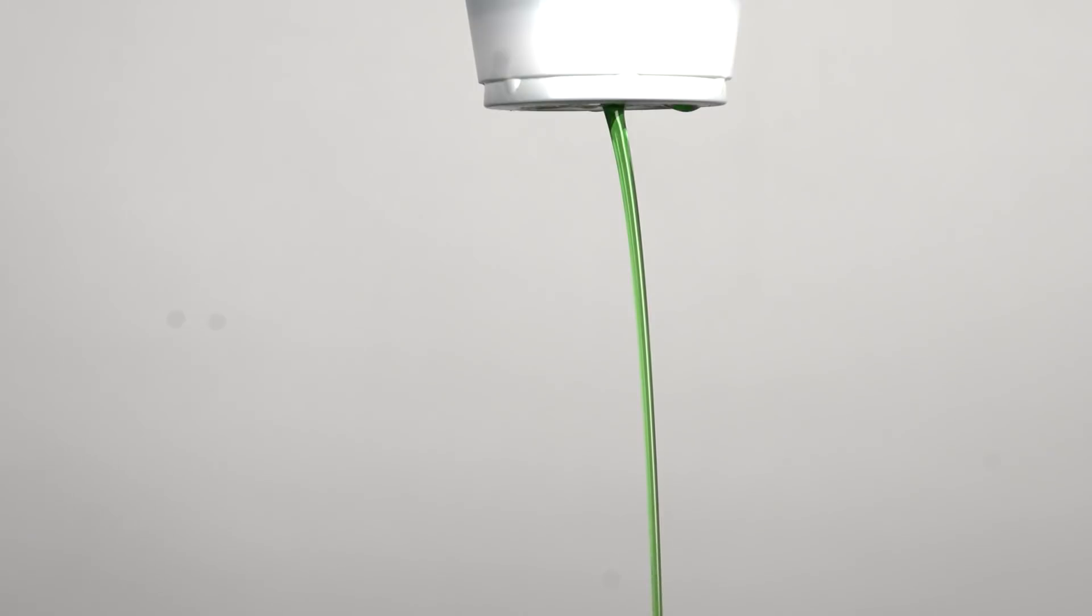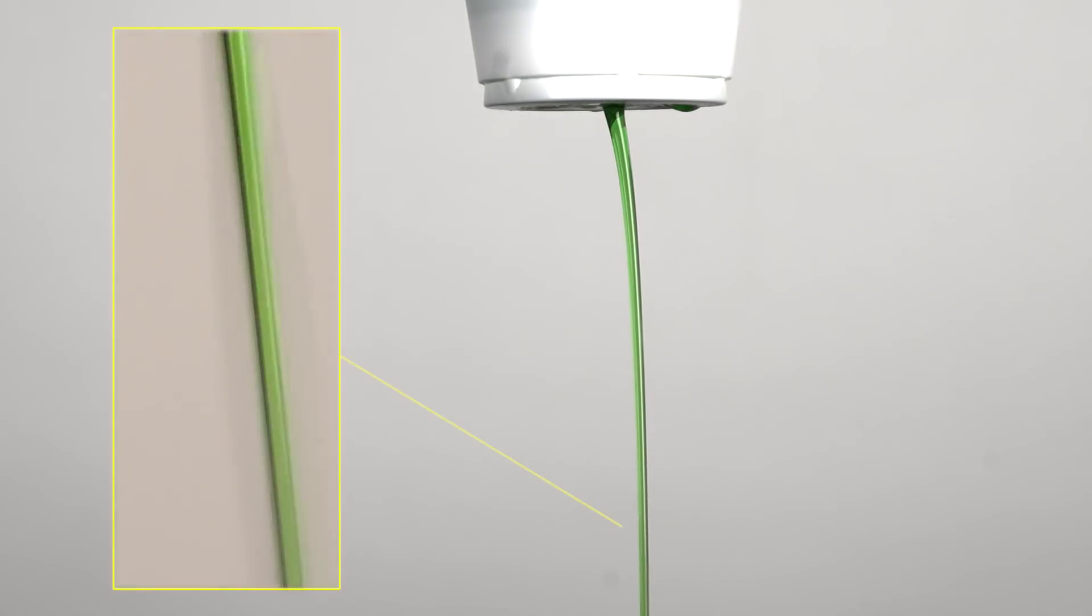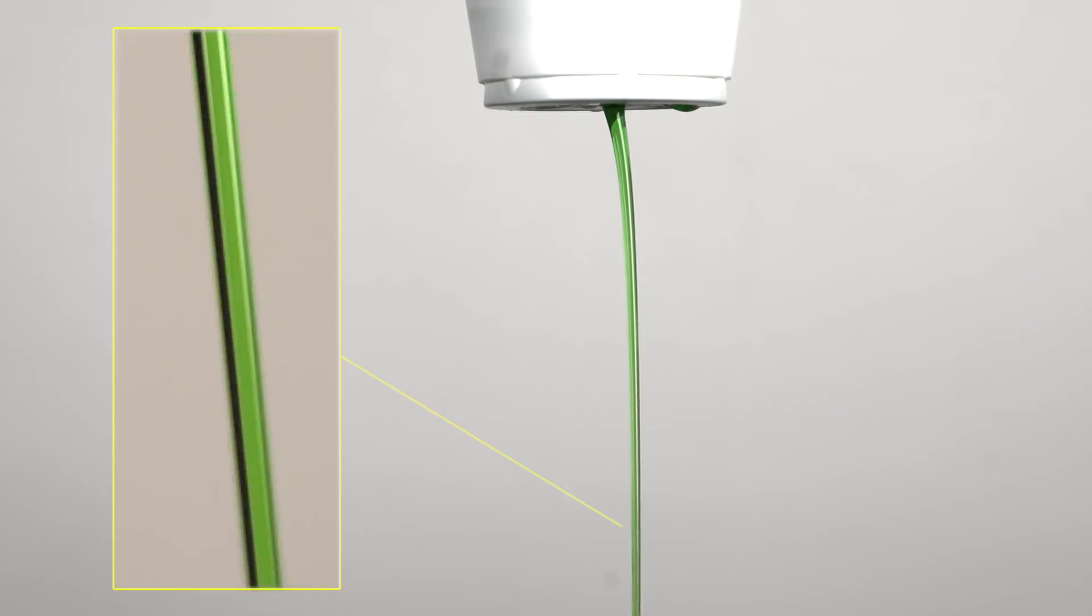You see a smooth jet exits, but as it travels further from the cup, the stream gets fuzzy, which you can see better in close-up. Let's slow this to see what occurs.